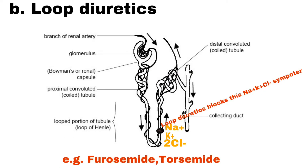Number 2 is Loop Diuretics. The Loop of Henle reabsorbs sodium, potassium and chloride ions via the sodium-potassium-chloride symporter. Loop Diuretics act on this symporter in the thick ascending limb of the Loop of Henle to inhibit sodium, chloride and potassium reabsorption. Blocking of this symporter leads to decreased reabsorption and reduced blood pressure. Examples are Furosemide and Torsemide.